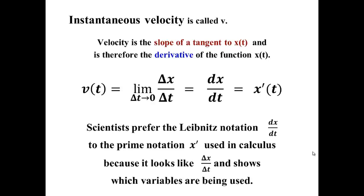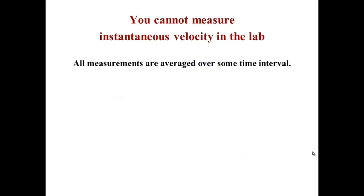The reason we like this notation — called Leibniz notation, which you'll also find in your calculus book — is that dx/dt looks like delta x over delta t. As delta t goes to zero, it turns into this infinitesimally small differential called dt. We can then see in our notation exactly what variables are being used, and think of them as being sort of like a delta x over delta t slope.